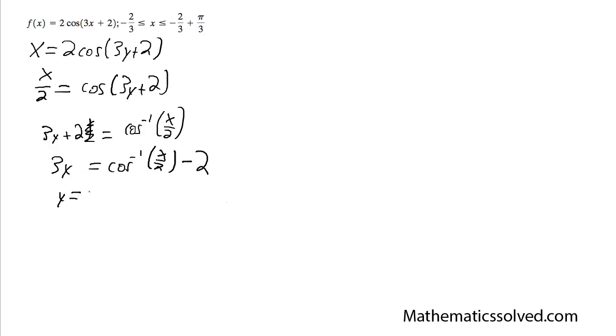And then I'm going to finally divide by 3. So y is equal to the cosine inverse of x divided by 2 minus 2, all divided by 3.